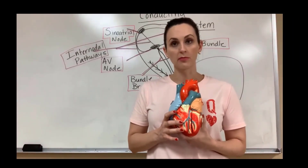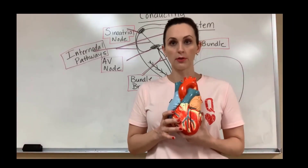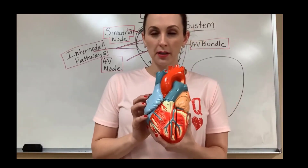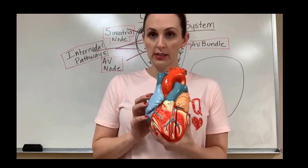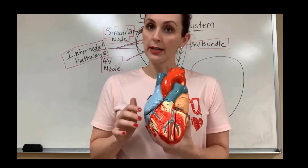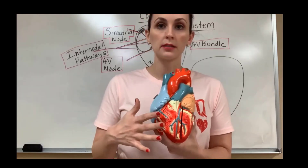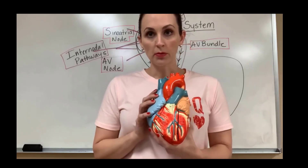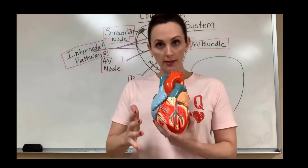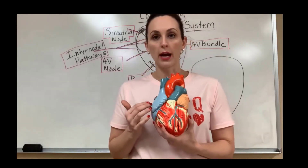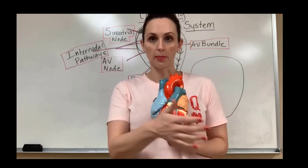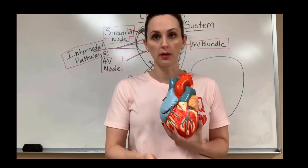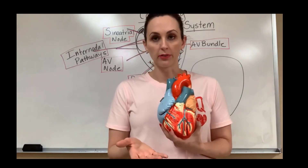Let's talk about the path of blood flow through the heart using a model. This model is excellent because of its size and also the coloration helps make it really easy to see where things are moving. Let's remember that because I'm facing you in this video, our rights and lefts are going to be opposite — the same way that right and left would be flipped in a book.